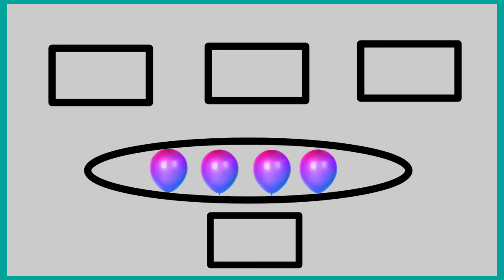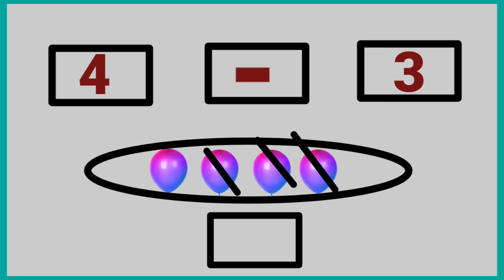In this picture there are four balloons. Three balloons flew away. How many balloons are remaining? That means four minus three is equal to one. One balloon is remaining.